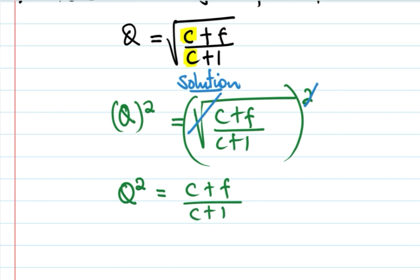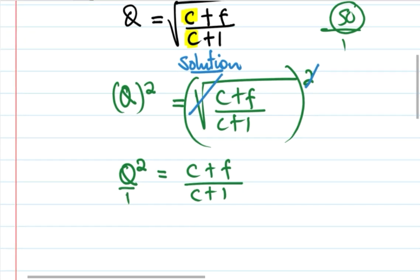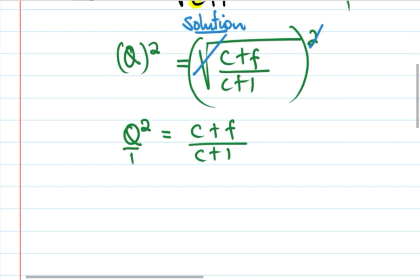The numerator is equal to C plus F, and the denominator is equal to C plus 1. So we need to do cross multiplication.